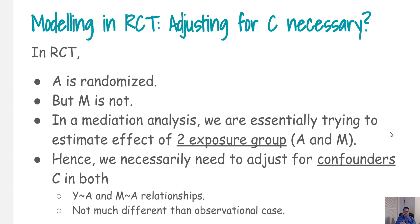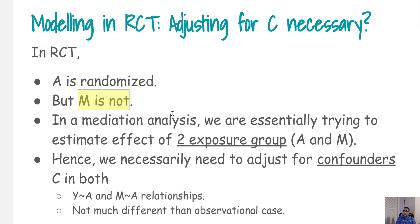One last important point: even in a randomized clinical trial where we randomize treatment — randomizing who belongs to the exposure group — A is randomized. But whether the person takes pain medication or not, the mediator variable M, is not randomized. It could happen that all people in the treated group take pain medication, and people not in the exposure group may also still take it, so there is no randomization around M.